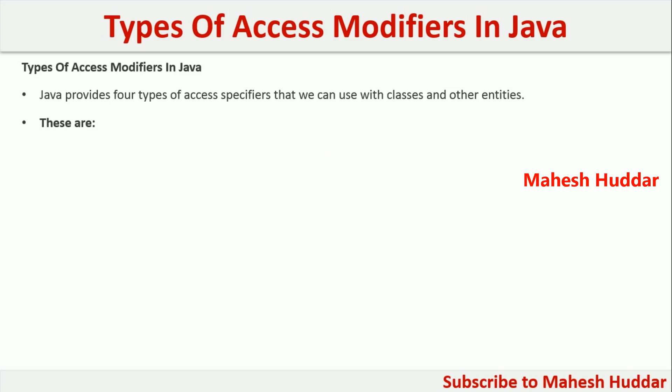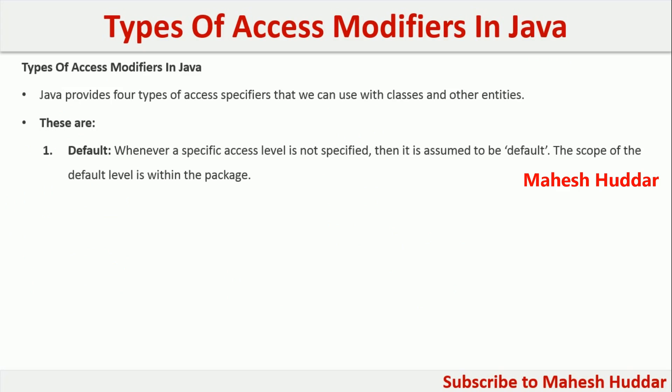The first access specifier or modifier is the default access modifier. Whenever a specific access level is not specified with respect to any data member or method, it is assumed that the entity is defined with default access level. The scope of the default access level is within a class — that is, whenever we define a method or a data member with no access level, it is accessible within a class as well as within a package.